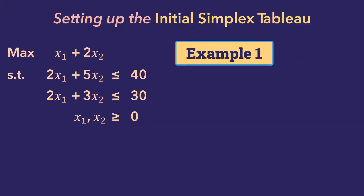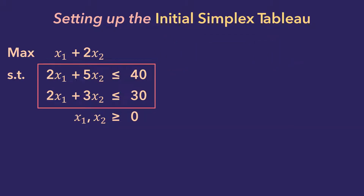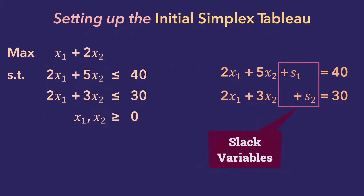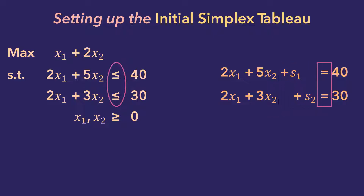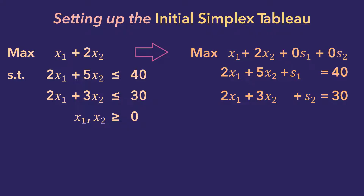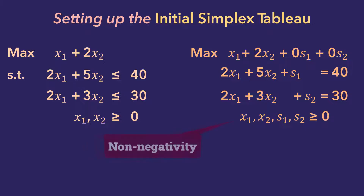Consider this LP problem. The two constraints have less than or equal signs. To convert them to standard form, we will add slack variables to them and change the inequalities to equalities. Since the slack variables do not affect the objective function, we will include them in the objective function with zero coefficients. And all variables are non-negative.